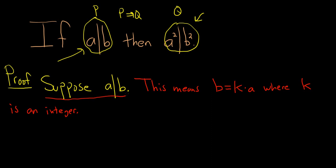So what would it mean for q to be true? Well, we know if a divides b, then b is a multiple of a. So this means that b squared is equal to, say, r times a squared. So this is what we're trying to show.